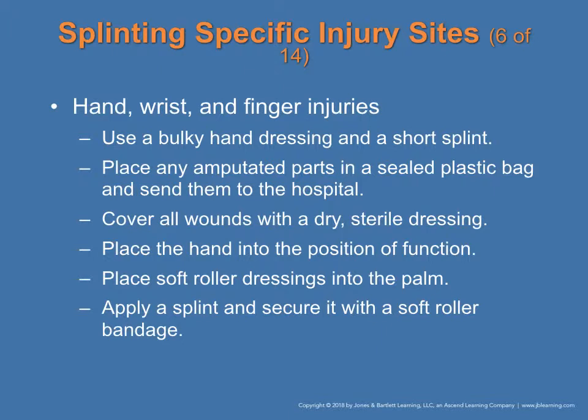For hand, wrist, and finger injuries, use a bulky hand dressing or short splint. Place any amputated parts in a sealed plastic bag and send to the hospital. Cover all wounds with dry sterile dressing. Place the hand in a position of function with soft roller dressing in the palm, then apply a splint and secure it with soft roller bandaging.